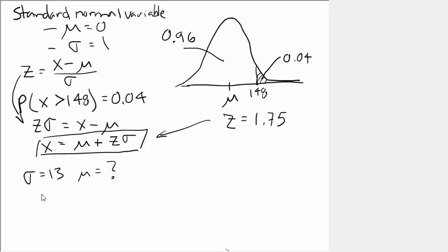I hope I'm doing that problem right. I'm going by memory now. Okay, what do we know? Well, we know x is 148. We know we're looking for the population mean. We know a z value, 1.75. And we know the standard deviation is 13. So, we can solve this for the population mean. And let me grab my calculator. I'll pause the video and be right back.